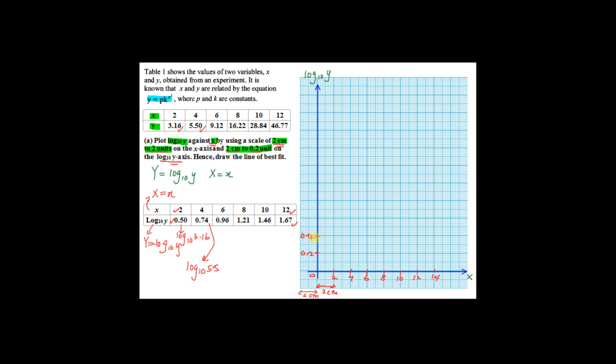So you have 0.2, 0.4, 0.6, 0.8, 1.0, 1.2, 1.4, 1.6, and 1.8.